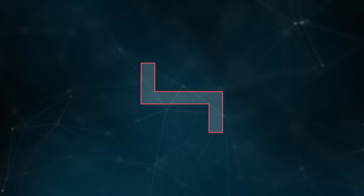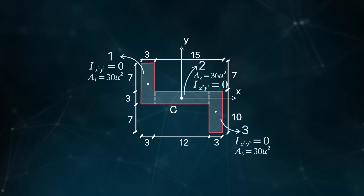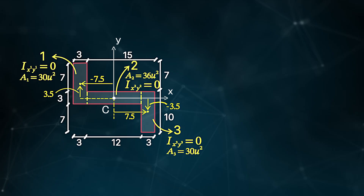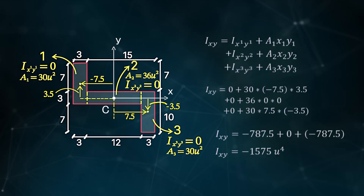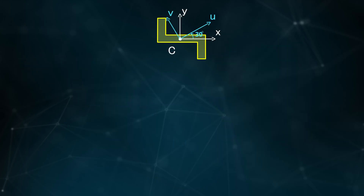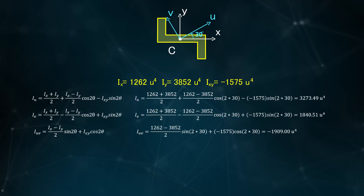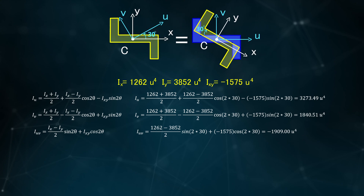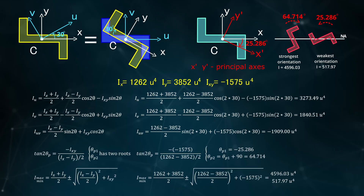To find the product of inertia of this cross-section, place the axes at the centroid as origin. For each rectangle, the product of inertia about axes through its own centroid is zero. Transferring to the centroidal axis using the parallel axis theorem, the total product of inertia is 1575 units to the fourth power. Substituting the rotation angle into the transformation formulas — taking counterclockwise as positive — gives the area moments of inertia about the new axes, including the maximum and minimum (principal) values.